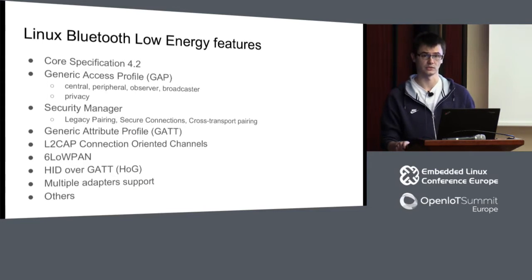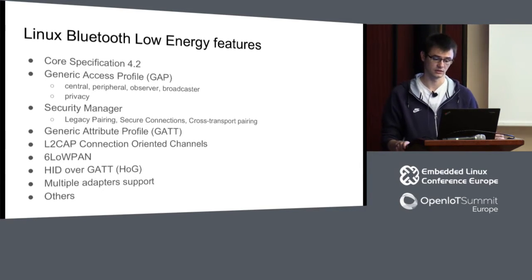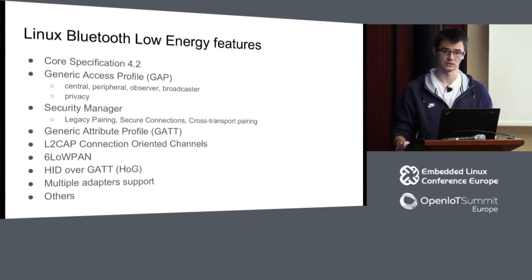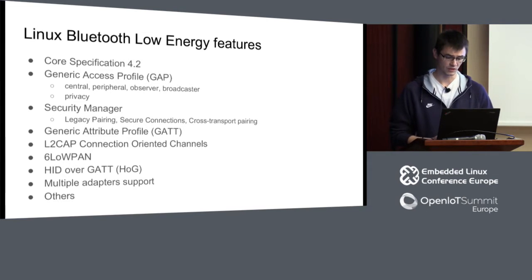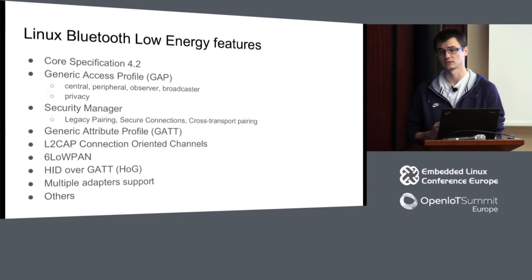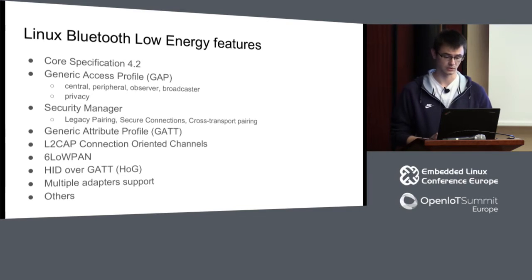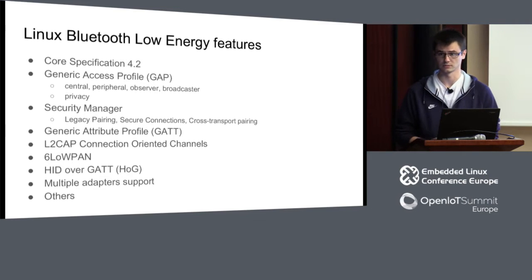What is supported by Linux? Basically core specification 4.2. This includes all roles like central, peripheral, observer, and broadcaster, plus a privacy feature using randomized addresses so nobody can track your device. The security manager supports both legacy pairing, secure connections for LE and BR/EDR, and cross-transport pairing. Generic Attribute Profile, L2CAP connection-oriented channels are provided by kernel as L2CAP sockets. 6LoWPAN and HID over GATT are supported. You can have multiple adapters and more.